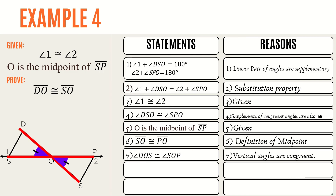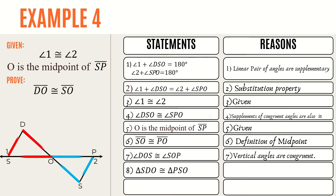Through statements 4, 6, and 7, we can now establish the congruence of the two triangles. Hence, triangle SDO is congruent to triangle PSO via the ASA congruence postulate. Finally, since side DO and side SO are corresponding parts of the two congruent triangles, therefore they are congruent. We can state that side DO is congruent to side SO by CPCTC.